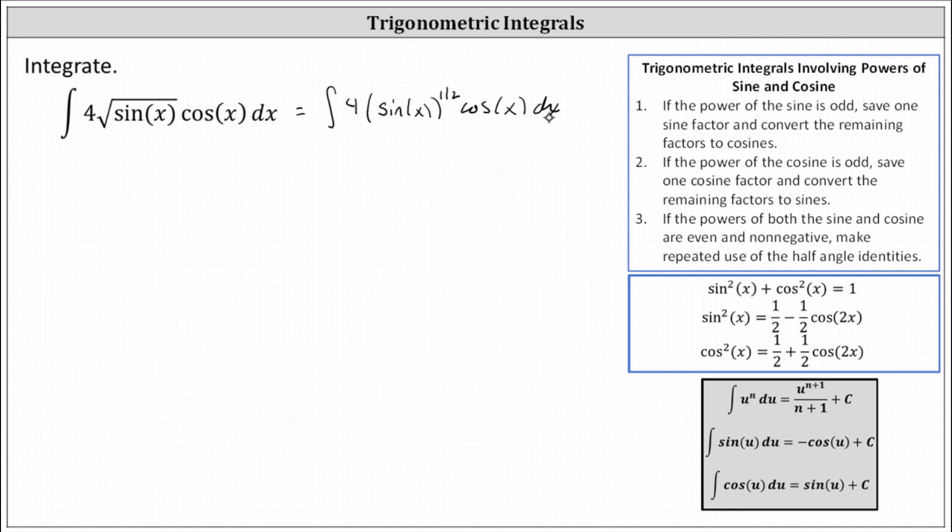And now let's perform substitution. If we try letting u equal cosine x, then du equals negative sine x dx, but notice here the sine function is raised to the 1 half power, so that won't work.